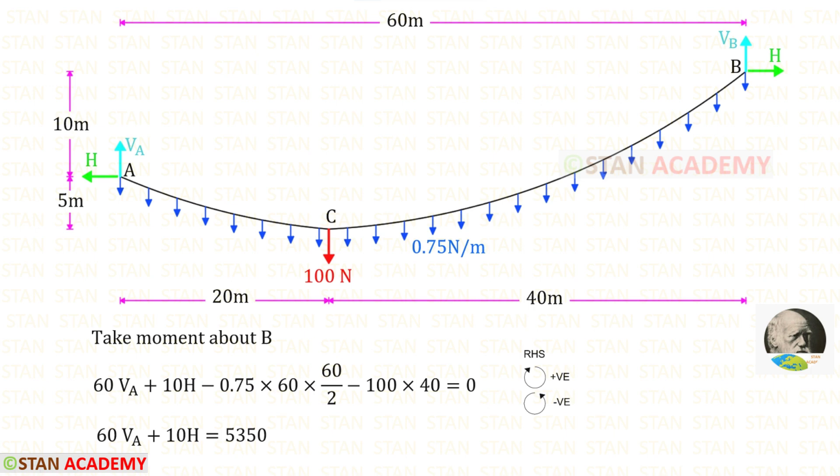Let us take a moment about the point B. VA is acting in the clockwise direction so it will be positive and the distance is 60, so 60VA. The horizontal thrust is acting in the clockwise direction so it will be positive. For the horizontal thrust the perpendicular distance is 10, so plus 10H.